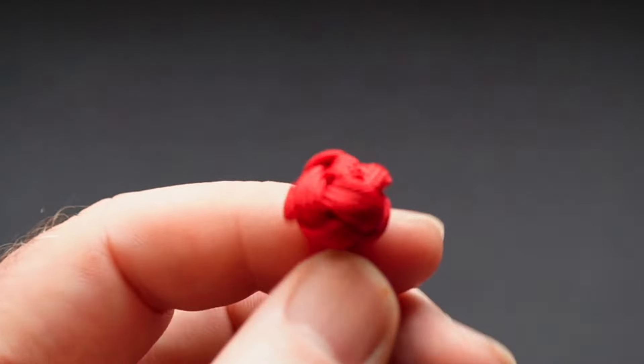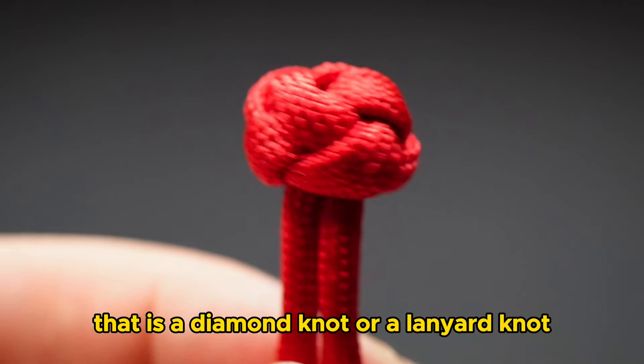And there we've turned it into a button. Now the reason why I flipped it over is so that you end up with the same length of cord at the end. So there you go, that is a diamond knot or a lanyard knot, whatever you would like to call it.